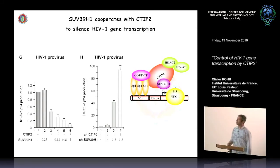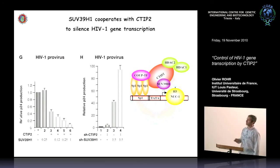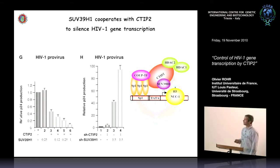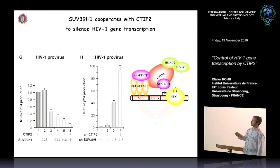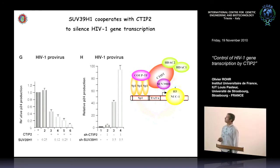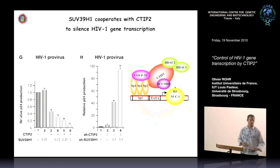Using the same strategy as for the HDACs, we infected microglial cells in the context of CTIP2 and SUV39H1 overexpression and saw cooperation in silencing of virus production. In the context of CTIP2 and SUV39H1 knockdown, we saw a strong increase in HIV-1 production. Again, this interaction is functional.